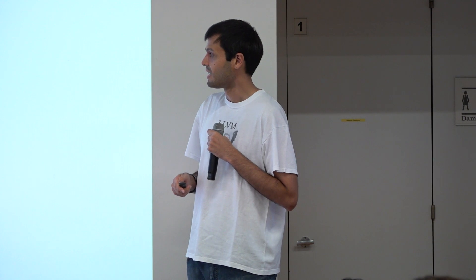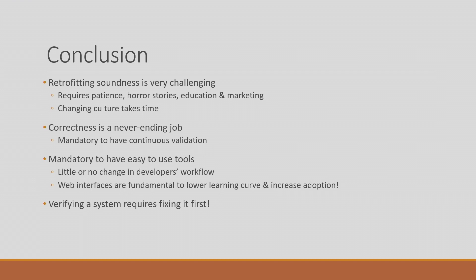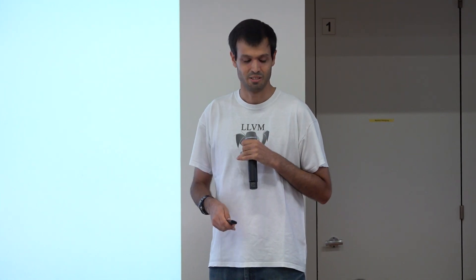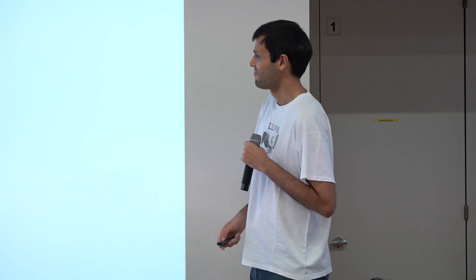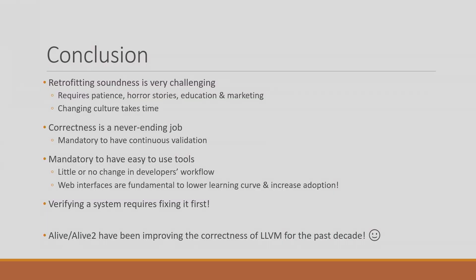The super important takeaway for students: verifying a real system requires fixing it first. Anyone who says they verified or specified a system and didn't find any bugs or fix anything has an 'assume false' somewhere — all real things are broken. If LLVM was correct, I'd have been done many years ago. I'm not done because we still don't know what a fully correct compiler means. We have been trying to improve correctness; we're not there, but things are a lot better than they used to be.